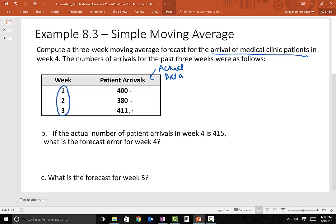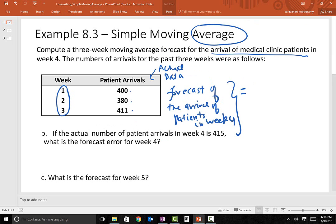Now based on the last three weeks data, can we forecast what is going to happen in the fourth week? The simplest way is to take an average of the last three weeks. So that's why this technique has the term average in it. I'm going to take 400 plus 380 plus 411, sum it up, take an average, and this amounts to 397. That is the forecasted value for the fourth week.